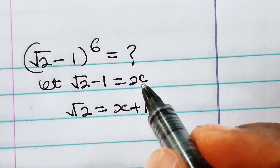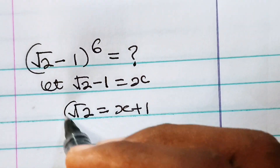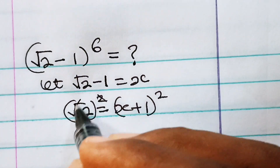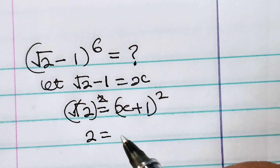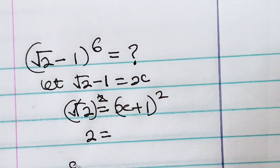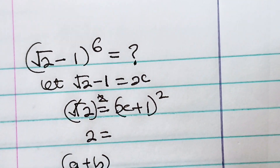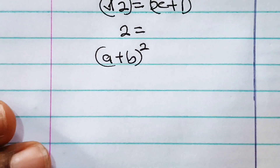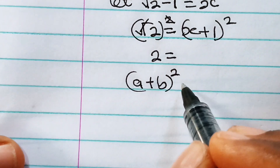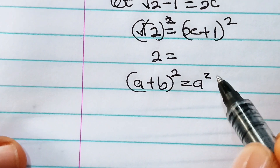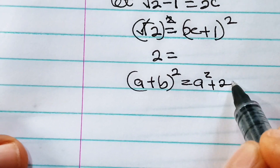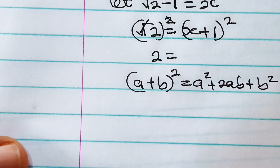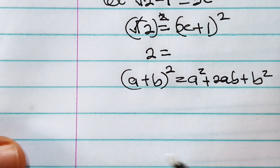Now let's square both sides of the equation so that we can remove this square root. When we do that, we are going to have that 2 is equal to... Now, when you have a plus b squared in algebra, a plus b squared is equal to a squared plus 2ab plus b squared.